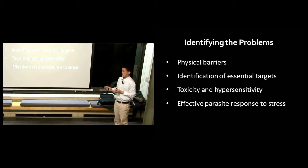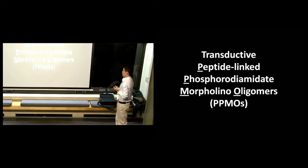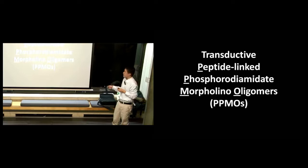So four challenges: the physical barriers imposed by the locations of parasites, identifying essential targets, reducing toxicity and hypersensitivity, and getting inhibitors across that thick layer of lipid to the dormant parasites. We believe this system is the answer: transductive peptide-linked phosphorodiamidate morpholino oligomers. What a mouthful! But if we break down this monster, it's basically two components joined together. The first component is the transductive peptide, and the second is morpholino, for short. Let's talk about morpholino first, then transductive peptide.